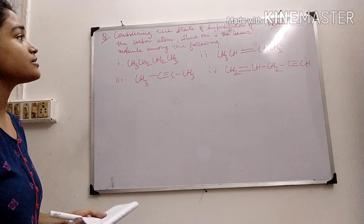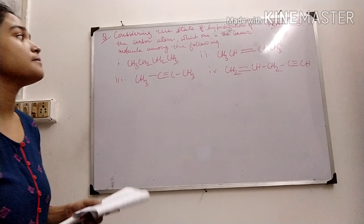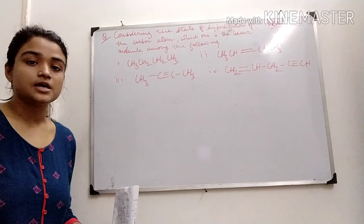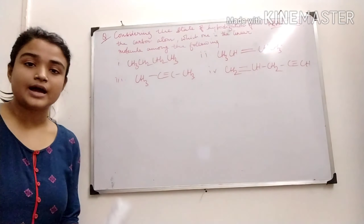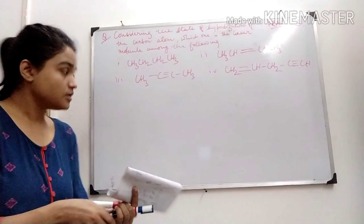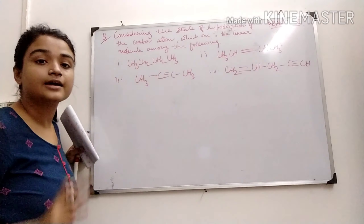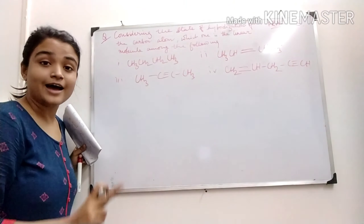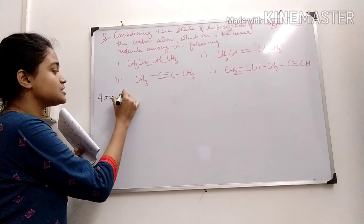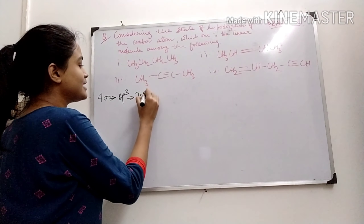Next, considering the state of hybridization of the carbon atom, which one is the linear molecule among the following four? We have to determine the hybridized state of each carbon atom. When 4 sigma bonds are present and no pi bond, the hybridization is SP3, which gives a tetrahedral geometry.